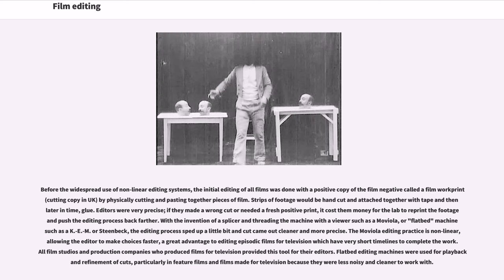Before the widespread use of non-linear editing systems, the initial editing of all films was done with a positive copy of the film negative called a film work print, or cutting copy in the UK, by physically cutting and pasting together pieces of film. Strips of footage would be hand cut and attached together with tape and then later with glue. Editors were very precise — if they made a wrong cut or needed a fresh positive print, it cost them money for the lab to reprint the footage. With the invention of a splicer and threading the machine with a viewer such as a Moviola, or flatbed machine such as a K.E.M. or Steenbeck, the editing process sped up a little bit and cuts came out cleaner and more precise.